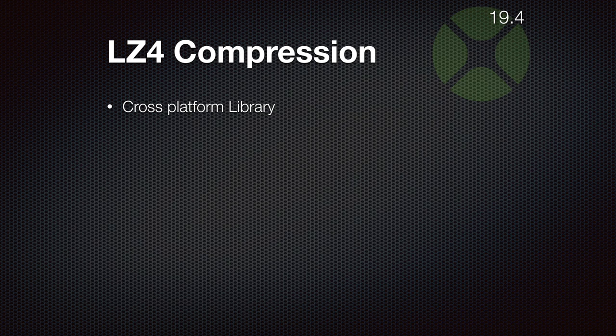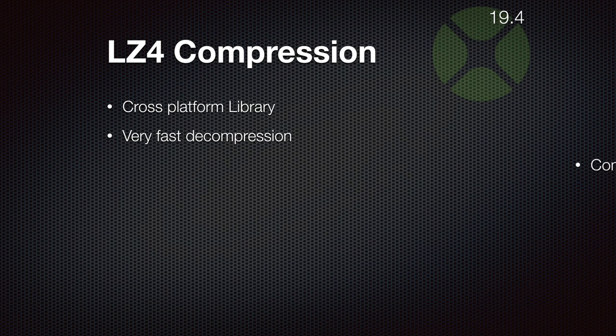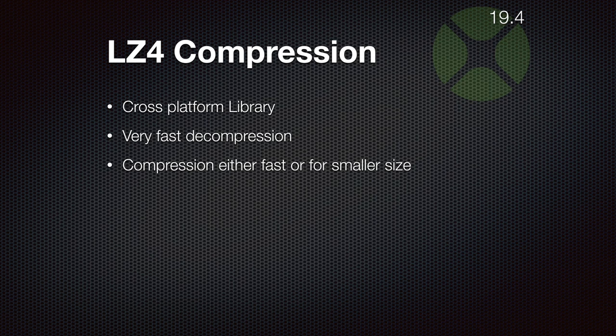For LZ4 compression we have a cross-platform library built into our plugins. This compression is optimized for speed — it may not compress as much as other high-performance compression routines, but it's very fast on decompression and is nowadays even built into the Linux kernel. You can decide whether you want fast compression or the smallest possible size by using more CPU cycles. Either way, the decompression is as fast as possible.